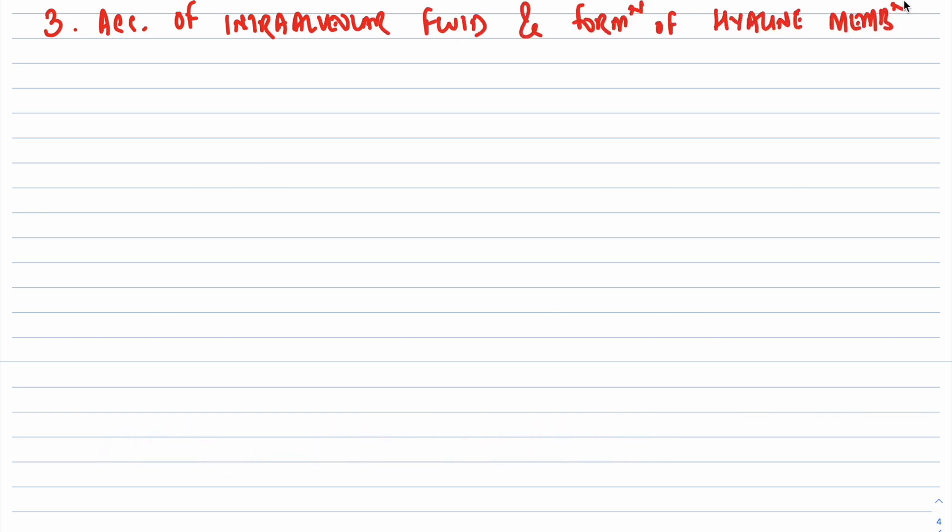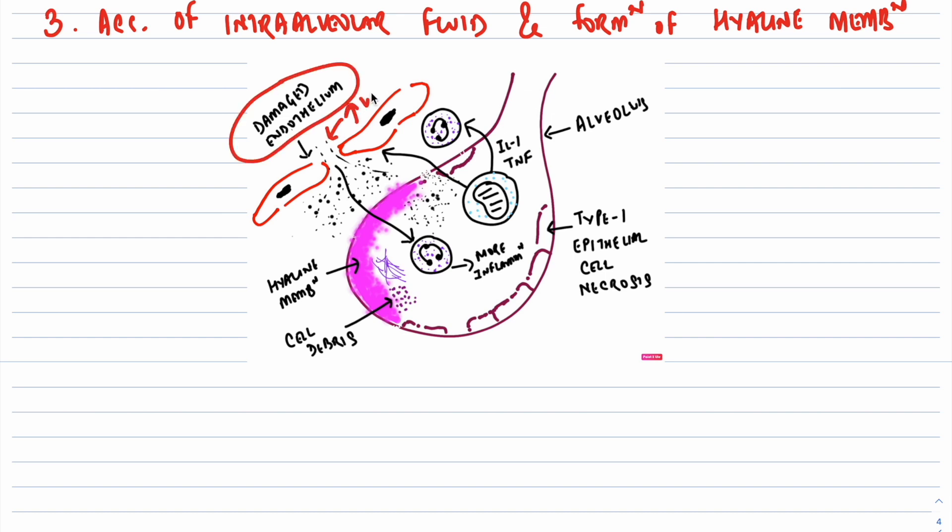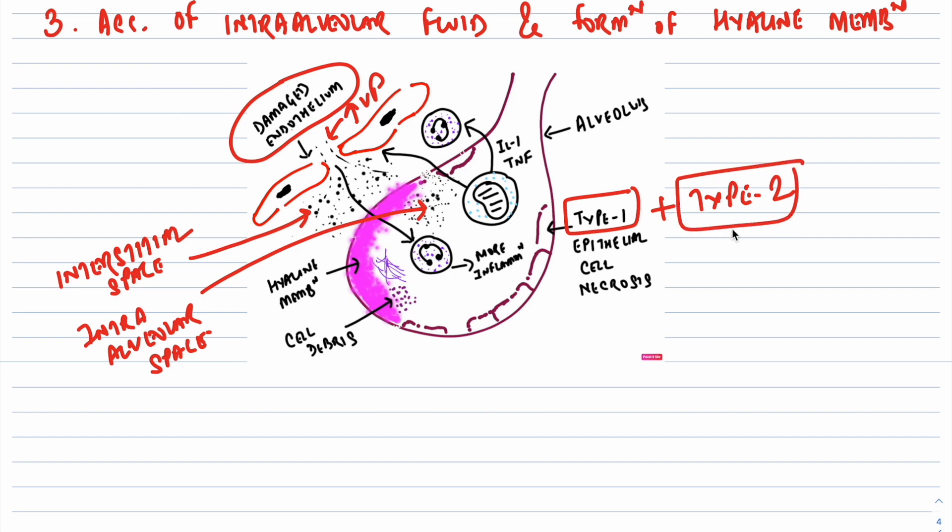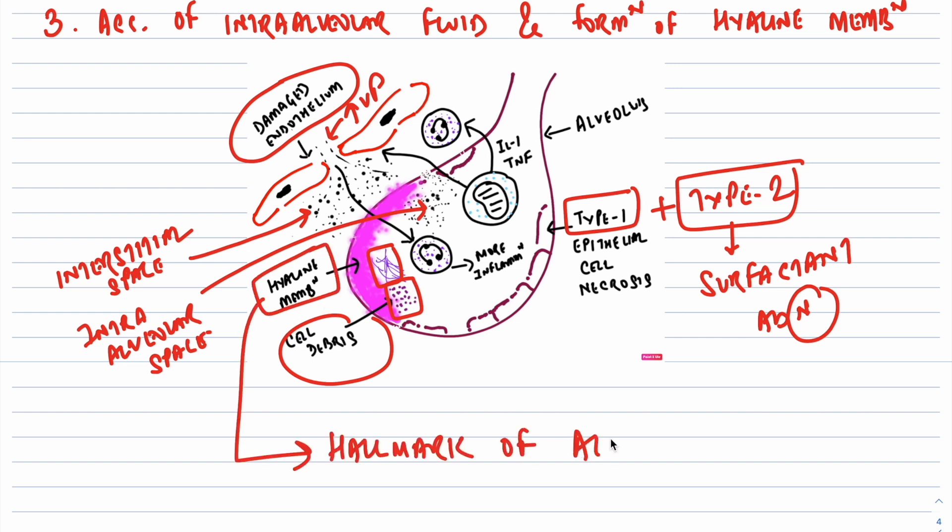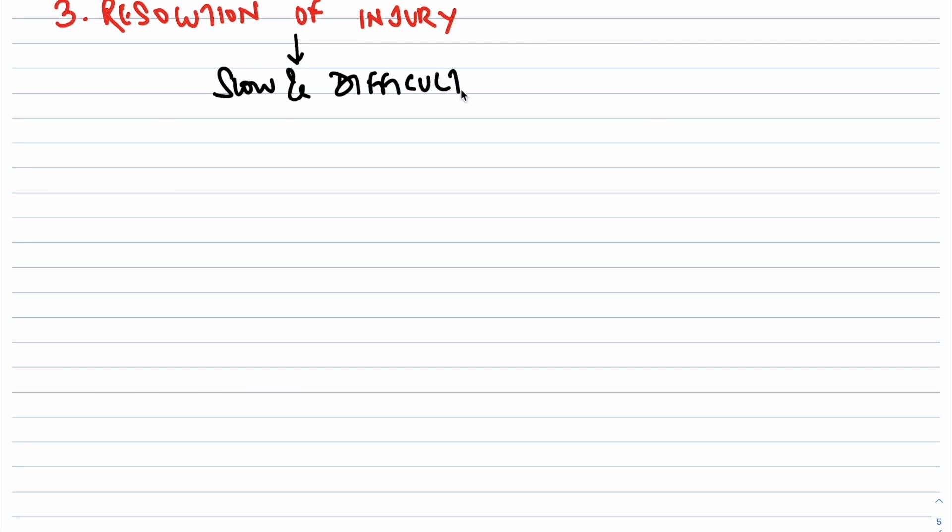The next pathological point is accumulation of intra-alveolar fluid and formation of hyaline membranes. Endothelial activation and injury increases vascular permeability, allowing interstitial and intra-alveolar fluid to accumulate. Damage and necrosis of both type 1 and type 2 alveolar pneumocytes occurs. Damage to type 2 pneumocytes leads to surfactant abnormalities. Ultimately, the protein-rich edema fluid along with debris from dead alveolar epithelial cells organize to form hyaline membranes, a characteristic feature of ALI or ARDS.